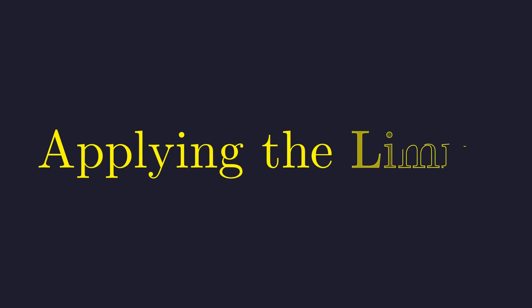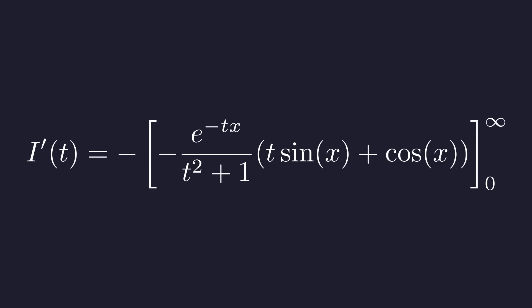Now let's return to our derivative, I prime of t, and apply the limits of integration. We need to evaluate this expression at infinity and at 0 and subtract the results. For this to converge, we must assume t is greater than 0. As x approaches infinity, the exponential term e to the power of negative t times x goes to 0, driving the entire expression to 0. At the lower limit, when x is 0,